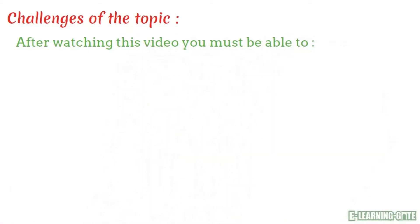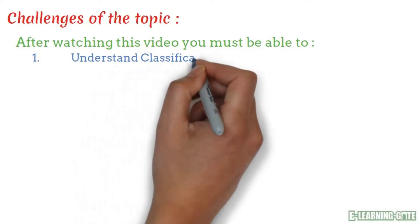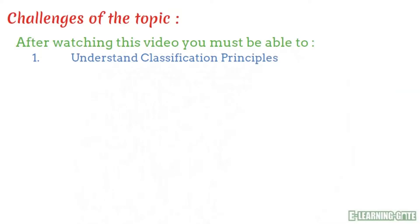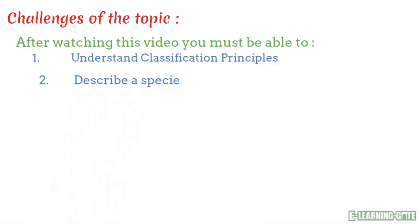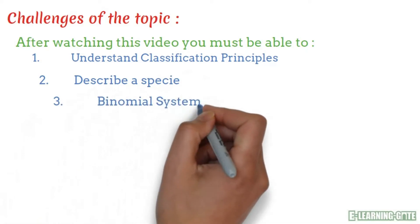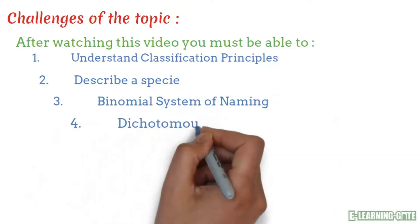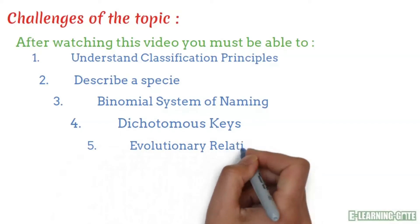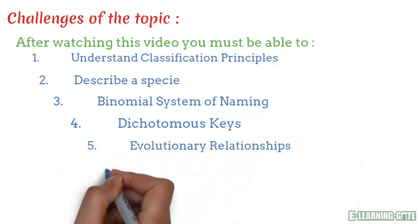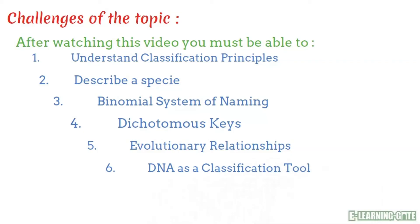By the end of this lesson, you should be able to: 1. Understand classification principles. 2. Describe a species. 3. Understand the binomial system of naming. 4. What are dichotomous keys? 5. Evolutionary relationships. 6 and 7. DNA — deoxyribose nucleic acid — as a classification tool, and genetic relatedness and base sequences. Numbers 6 and 7 will be covered under the same concept.